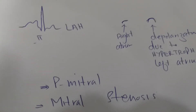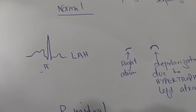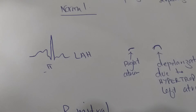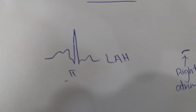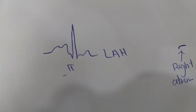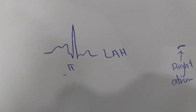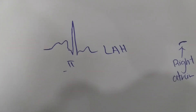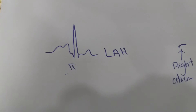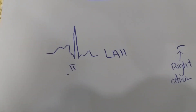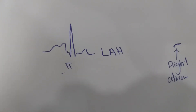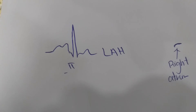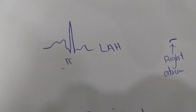P mitrale draws its name from mitral stenosis. The first notch is due to right atrial depolarization, and when it is about to end, depolarization of the hypertrophied left atrium begins and generates its own notch. This double-notched morphology is known as P mitrale and shows the presence of left atrial hypertrophy.